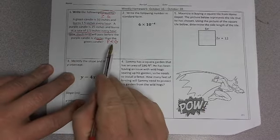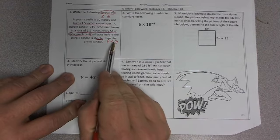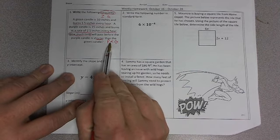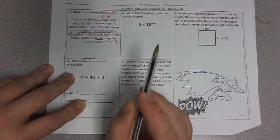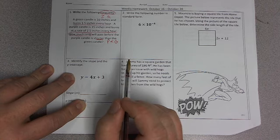So that tells us which direction the inequality symbol should be facing. The less than part of the inequality symbol should be facing the purple candle. So now let's just write the inequality.